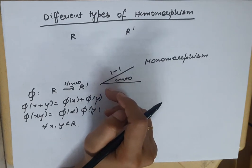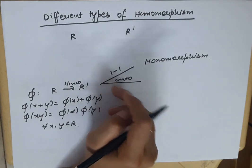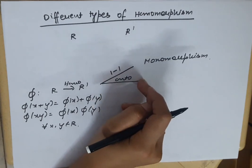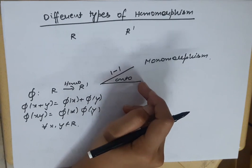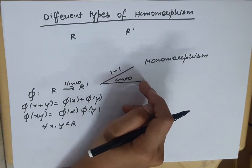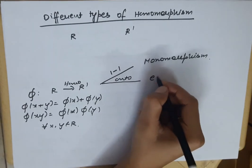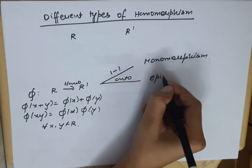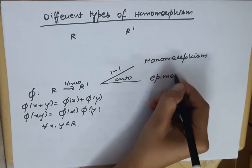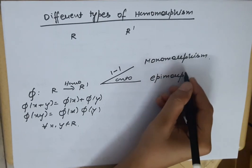Second condition: if there is a mapping that is a homomorphism and also onto, we call this mapping an epimorphism.